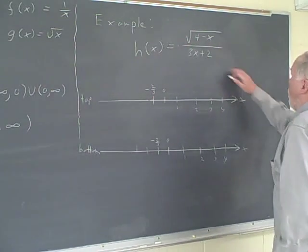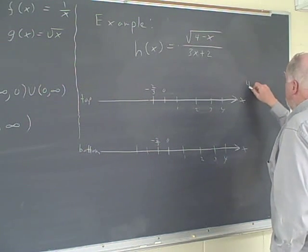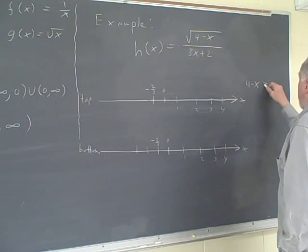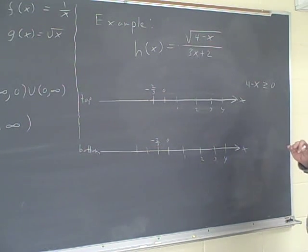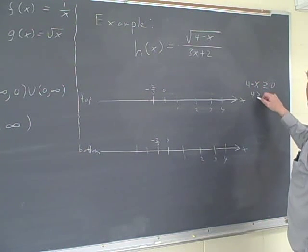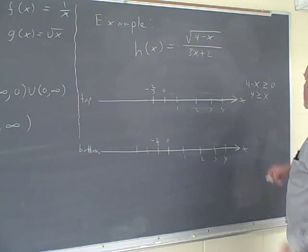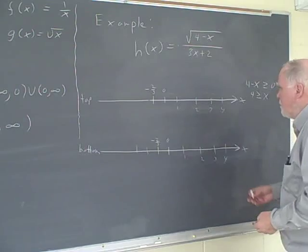When I do that, let's see what I get. I know whatever this quantity is, this 4 minus x, it must be greater than or equal to 0. It could equal 0 because we know the square root of 0 is 0. But this must be greater than or equal to 0, or 4 must be greater than or equal to x. So x has to be less than or equal to 4.